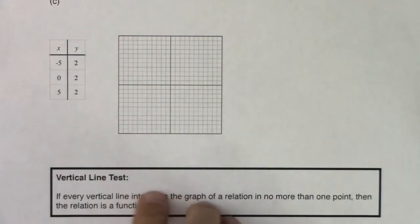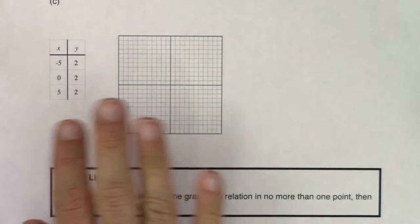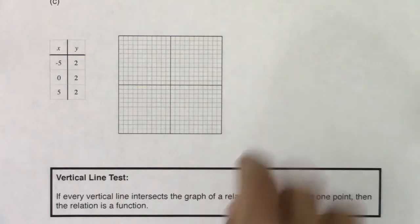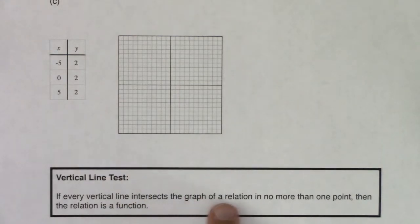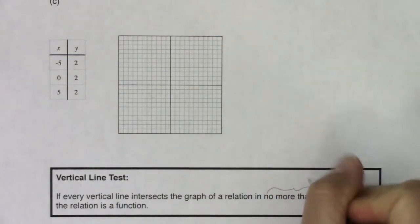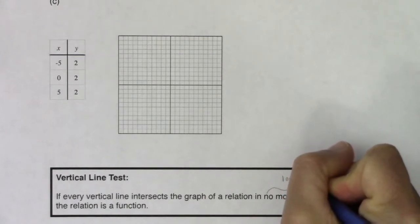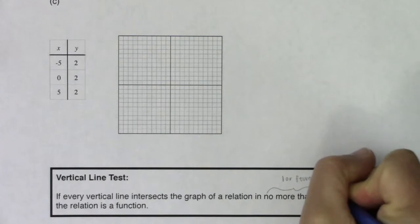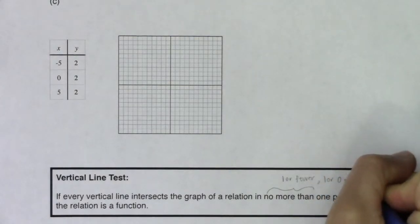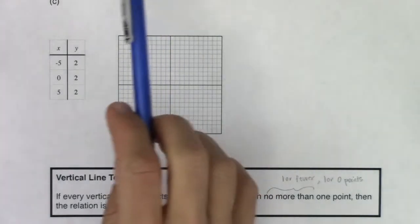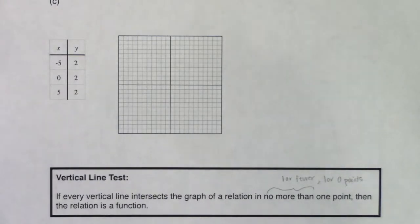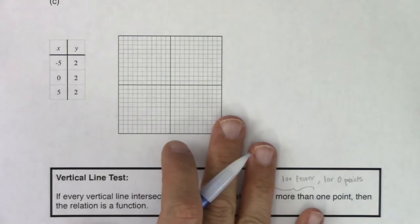I don't necessarily use the vertical line test when I just have ordered pairs, but when we get into more complicated graphs, I definitely use it. We're going to draw vertical lines — as many as you want — through our graph, and see if those lines intersect our relation in no more than one point. 'No more than one point' means one or fewer points, which really means one or zero points on the graph.